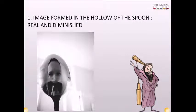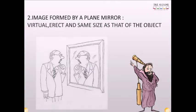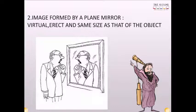Image formed in the hollow of the spoon: real and diminished. Image formed by a plain mirror: virtual, erect, and same size as that of the object.